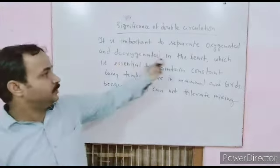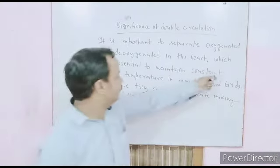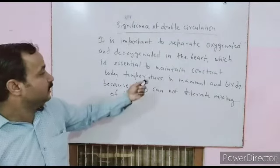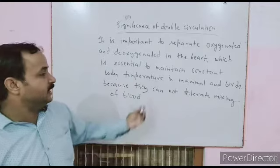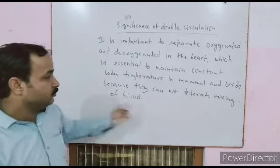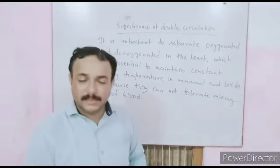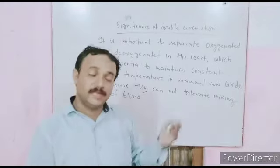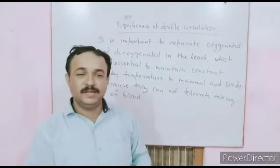It is important to separate oxygenated and deoxygenated blood in the heart, which is essential to maintain constant body temperature in mammals and birds. Mammals and birds cannot tolerate mixing of blood because the energy requirement to maintain body temperature would not be fulfilled.